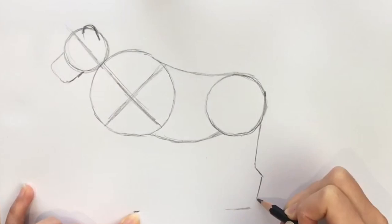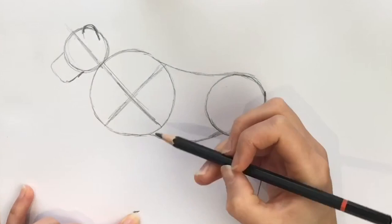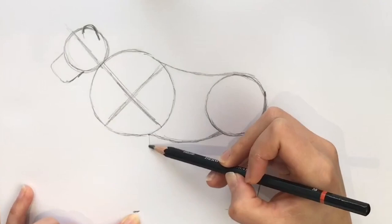And this one's a lot easier. So where the belly joins this large circle, we're just going to draw a line straight down like a reverse L shape.